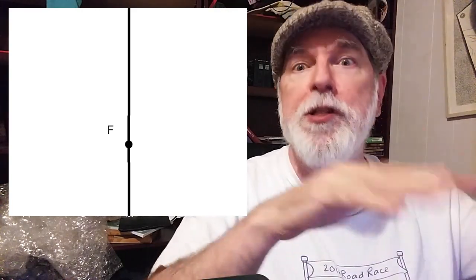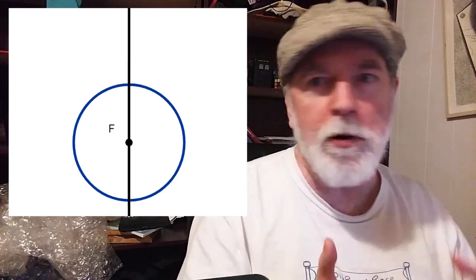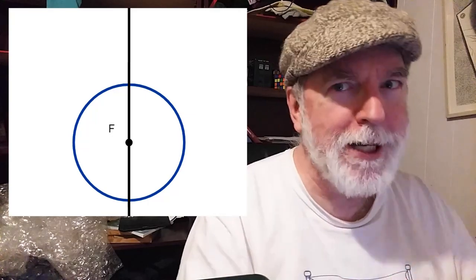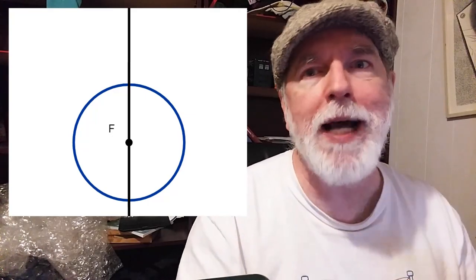We start with a vertical line. So it's all about constructions. We choose a point F on that line, and then we draw a circle around F, and we'll call the upper point where that circle intersects our vertical line, we call that C.